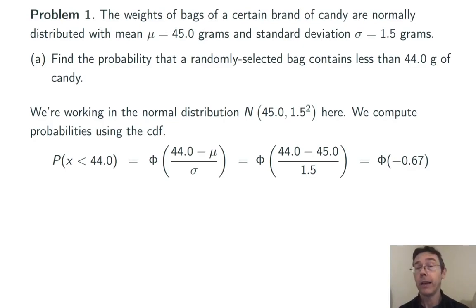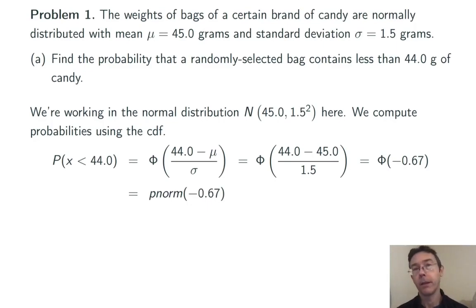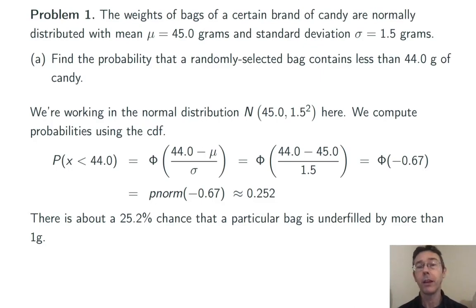There are many ways of calculating this normal CDF — you can use a table, a TI calculator, or a web app for example. I use R, I recommend R, where the command is pnorm of negative 0.67. In this case we get approximately 0.252. So there's about a 25% chance that a particular bag is underfilled by more than a gram.